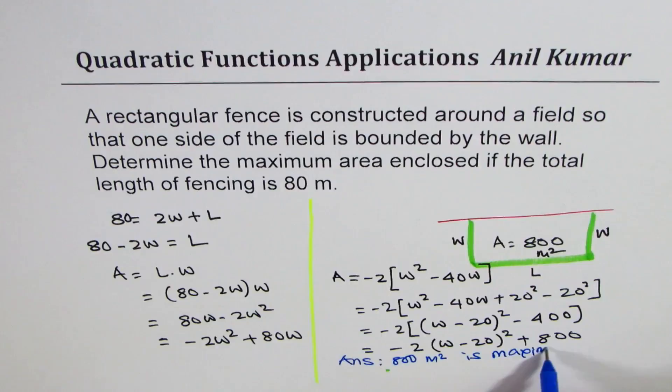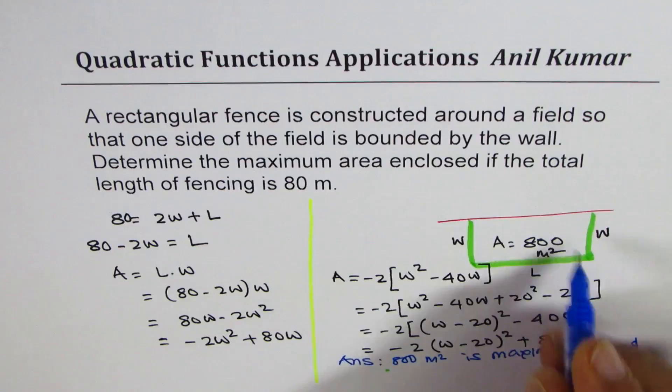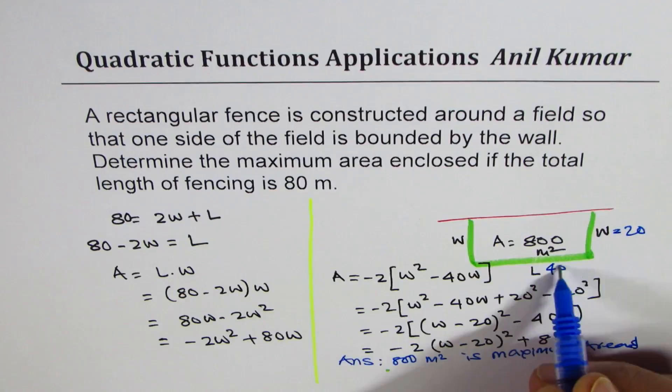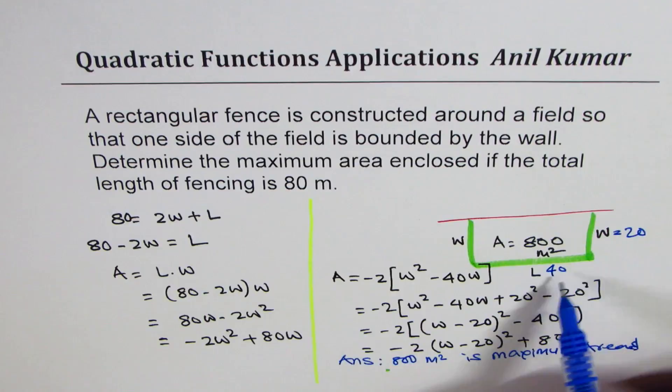You can definitely find what the dimensions of this rectangle will be. Since we know W equals 20 gives you maximum area, and length will equal 80 minus 2W, which is 40. So in such cases where we are working on three sides, the ratio is 1 to 2.